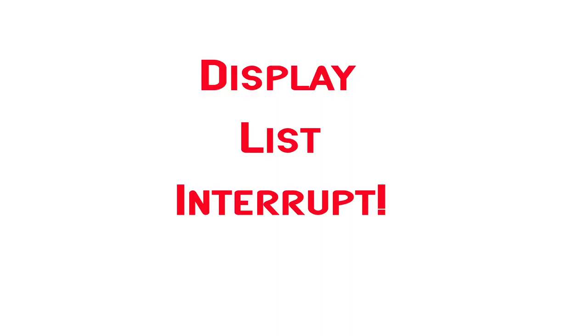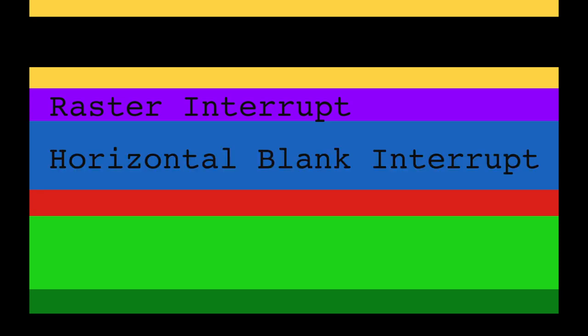Fortunately, the Atari engineers built a remedy for these restrictions called a display list interrupt, also known as a DLI. The DLI makes it possible to control the background color of every line drawn on the screen. This interrupt is sometimes referred to as a raster interrupt or horizontal blank interrupt. The Atari 8-bit home computers were the first to do this.